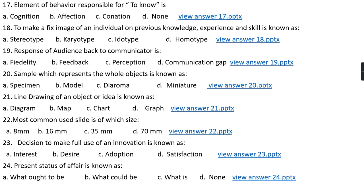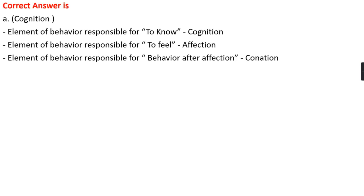Question number seventeen: The element of behavior which is responsible for knowing is cognition. The element of behavior which is responsible for feeling is affection, and the element of behavior which is responsible for behavior after affection is conation.